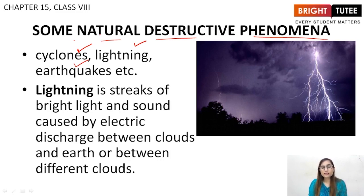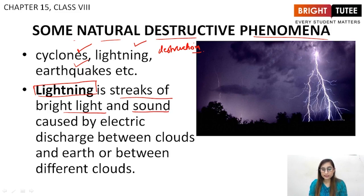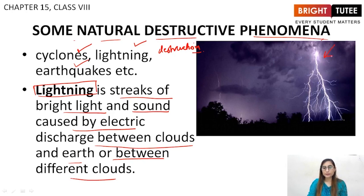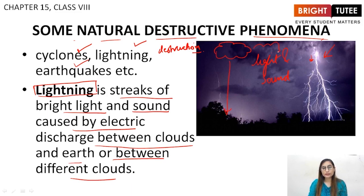These destructive phenomena cause destruction and are not good for our environment. Now, what is lightning? Lightning is streaks of bright light and sound caused by electric discharge between clouds and the earth, or between different clouds. There may be charge discharge between two clouds or between the earth and a cloud. This is how lightning takes place.